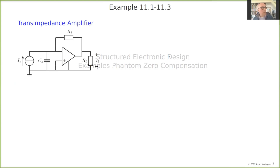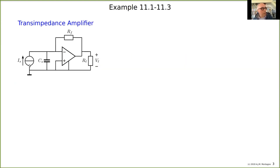Let's study a transimpedance amplifier. We have a current source and a source capacitance, and we want to build a transimpedance with an operational amplifier. The feedback network uses parallel sensing and parallel comparison, so the transfer of this will be minus Rf.